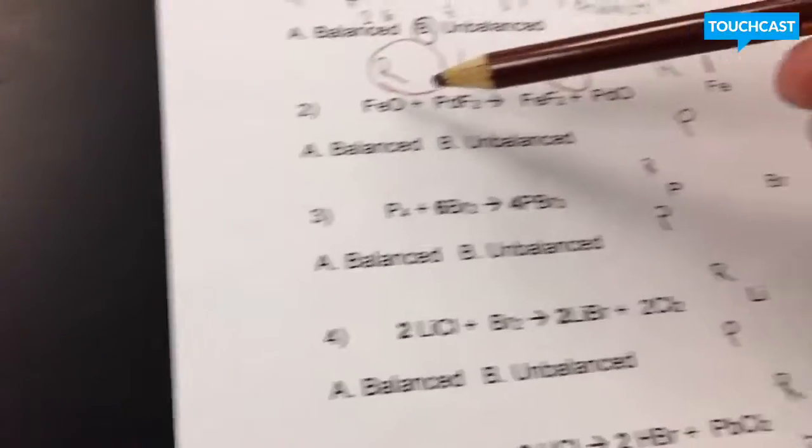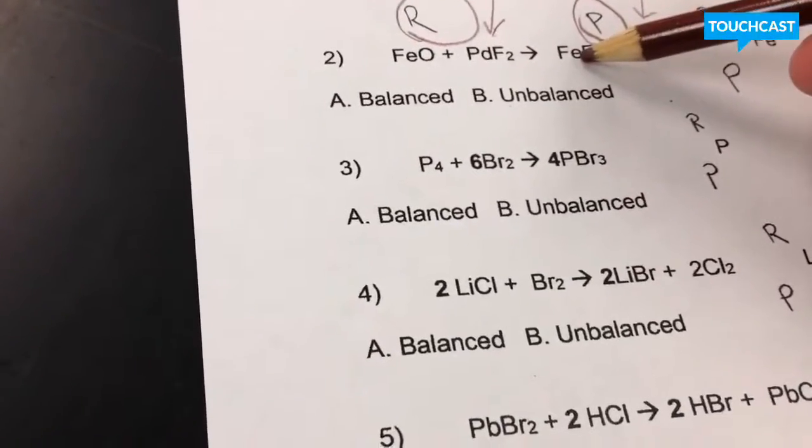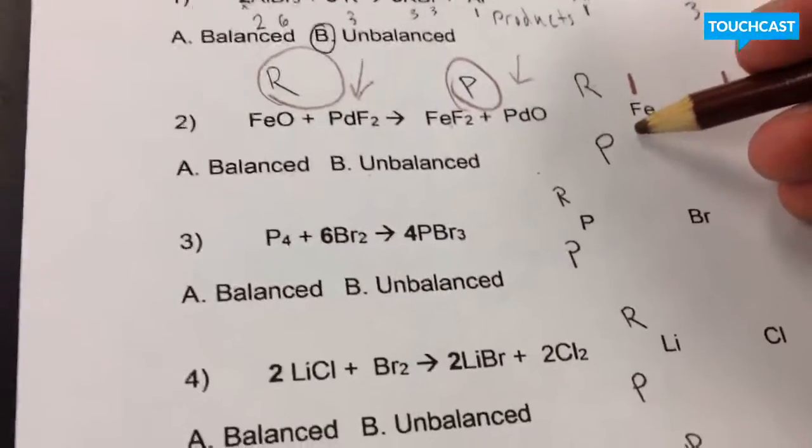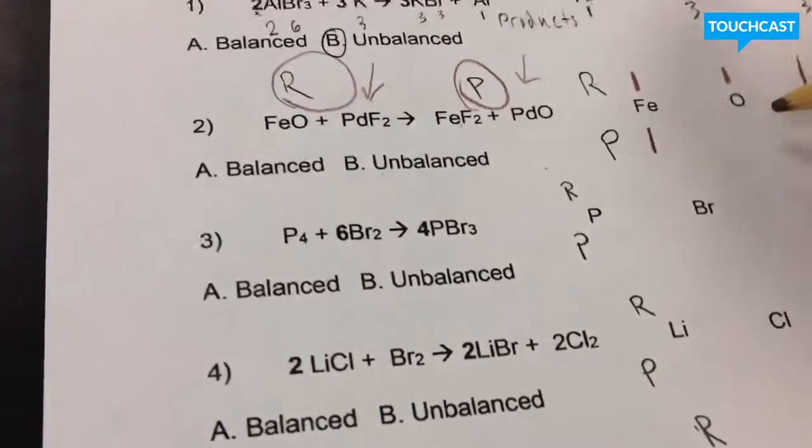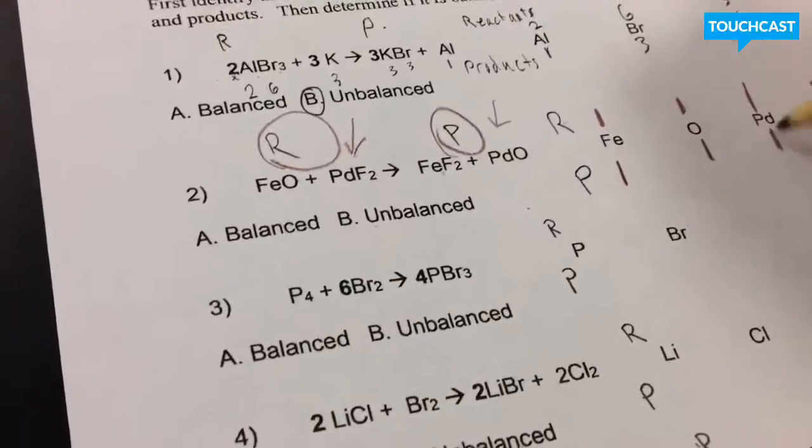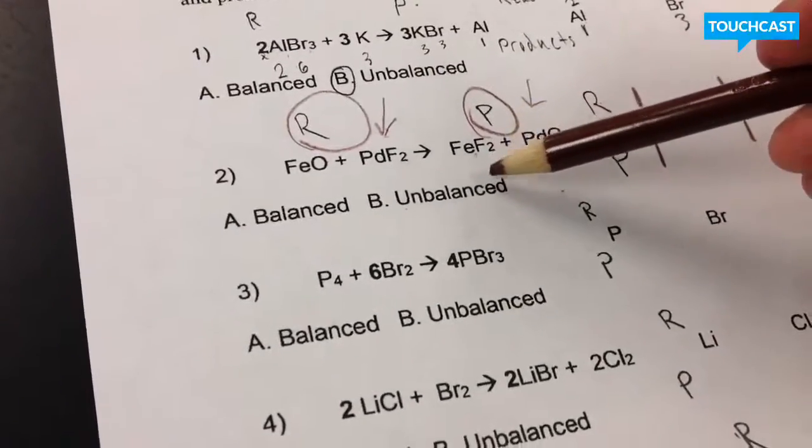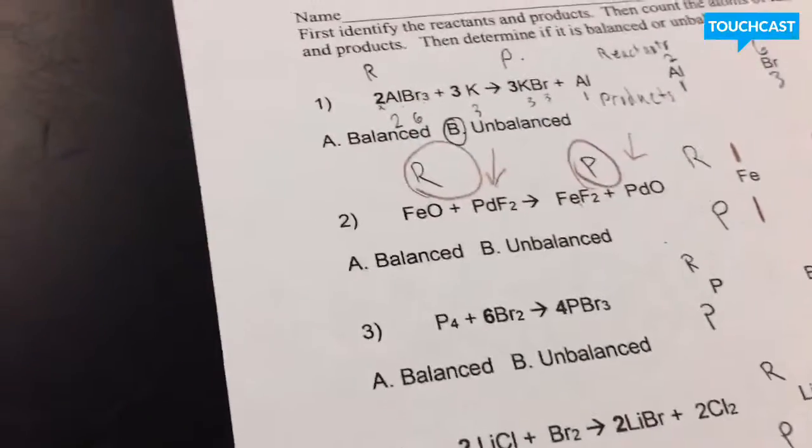Now, down here for products. If you look here, we have basically, we have one iron. So I'd find the products right here. Now, I'll write one for my iron. I have one oxygen. I have, let's see right here, one PD. And, if you look right there, our subscript says that we have basically two fluorines.